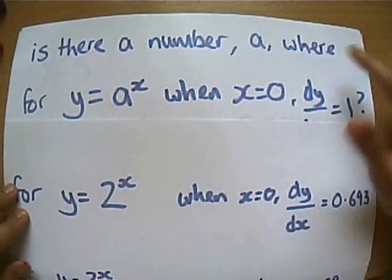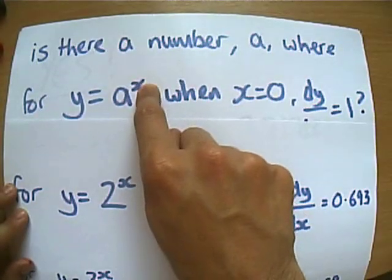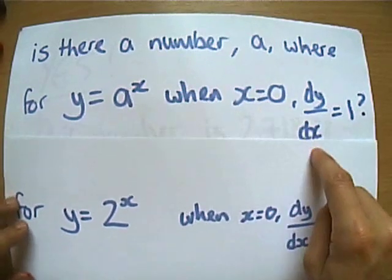Okay, here we are. Is there a number a, somewhere between 2 and 3, that when you do a^x, when it crosses the y-axis, when x is 0, dy/dx is 1?